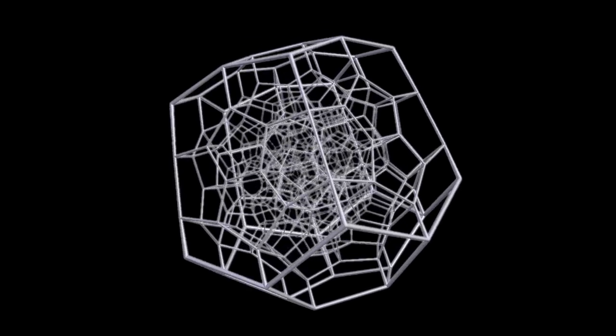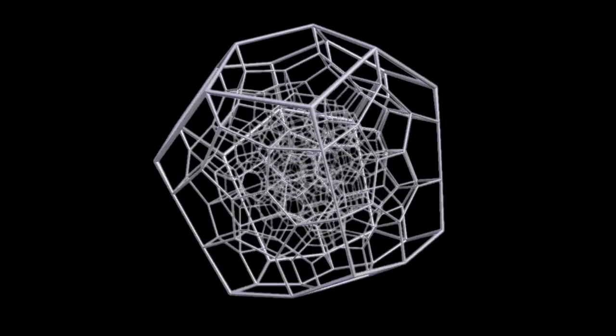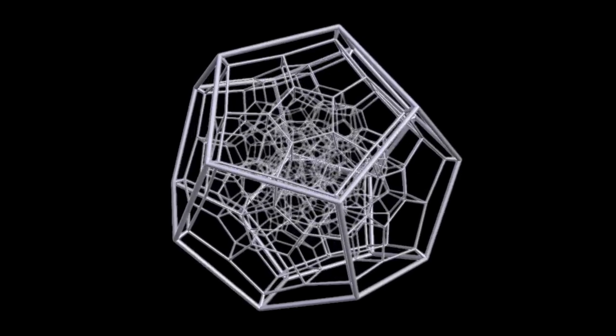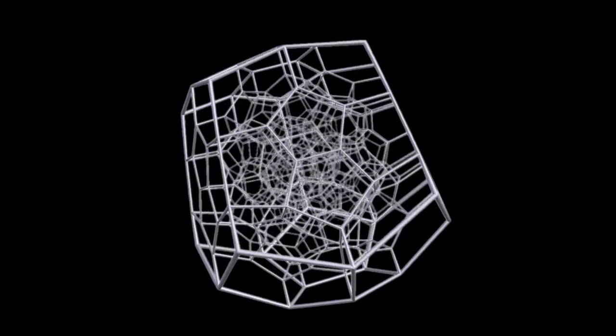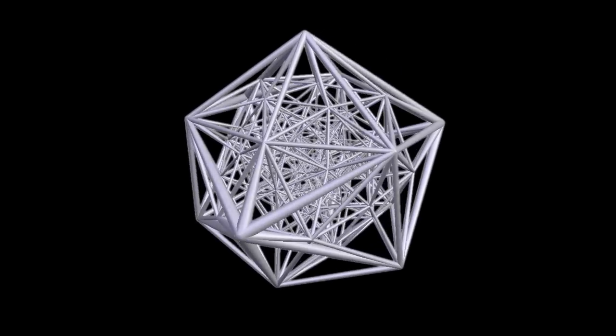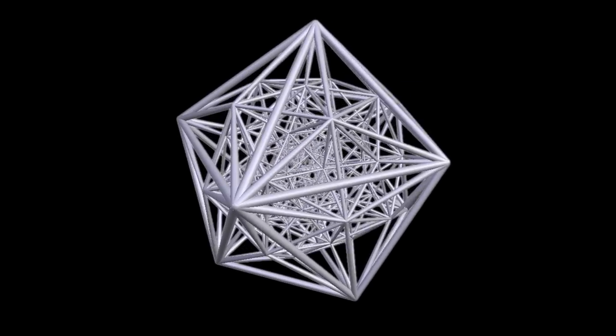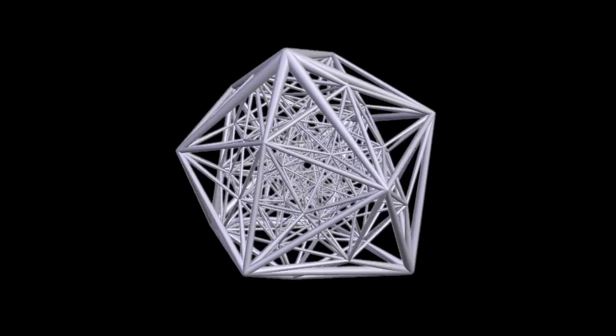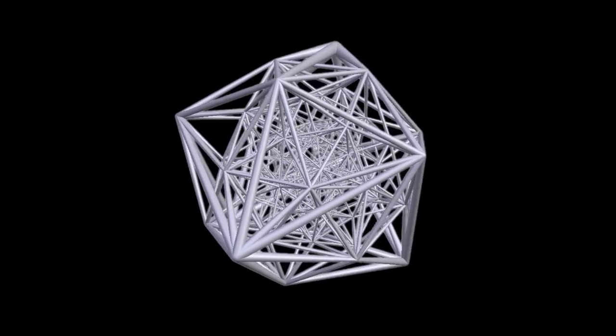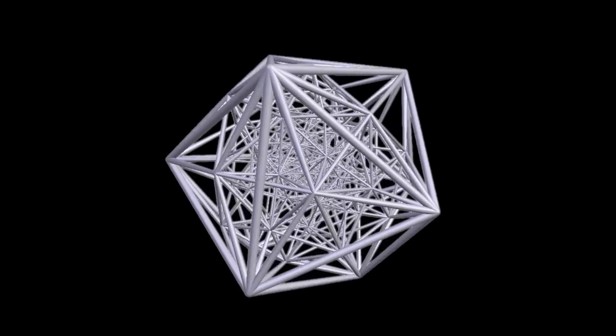120 regular dodecahedrons all joined three to an edge to make the hyper dodecahedron. And finally, if you have 600 tetrahedrons lying around, you can join them five to an edge to make the hyper icosahedron. So there you have it. In 4D you still have five platonic solids.